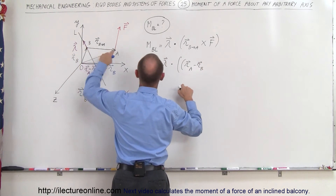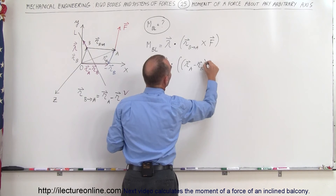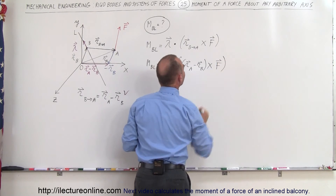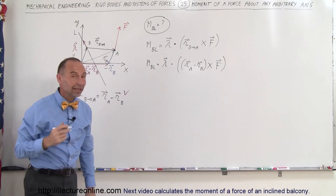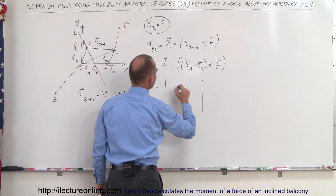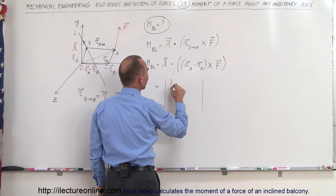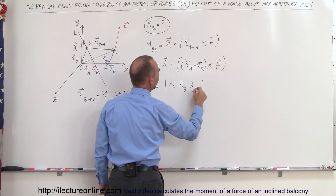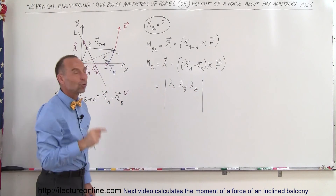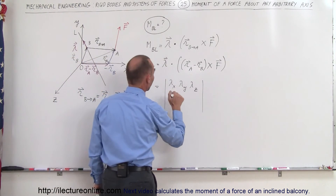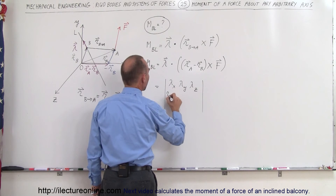That quantity — R_A minus R_B — is the vector from B to A, multiplied via a cross product times the force acting at A. Written in matrix format, this equals the magnitude of the unit vector in the x-direction, y-direction, and z-direction — basically the direction cosines of the arbitrary axis — times R_Ax minus R_Bx.